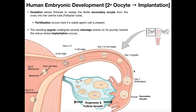Here we're going to pick up with the actual zygote. On day one, recall that fertilization actually occurred in the ampulla of the fallopian tube. From the ovary after ovulation, the secondary oocyte doesn't have to travel very far — it goes through the fimbriae into the infundibulum and then into the ampulla region where it's fertilized. The sperm cell had to travel all the way up through the vaginal orifice, through the vagina, through the cervical canal, through the uterus, and then through the correct fallopian tube to reach this ampulla region.